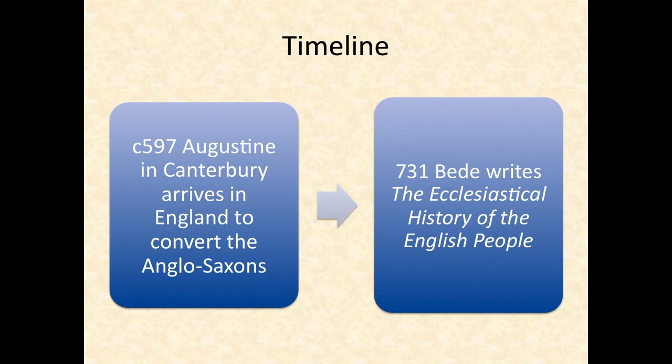By the time of Bede himself, England had largely been Christianized. Bede was a monk and priest at a famous Benedictine monastery, and in 731 he finished writing his Ecclesiastical History of the English People, which drew on both documents and the memories of living people to construct a still-valuable history of the conversion of the Anglo-Saxons to Christianity.